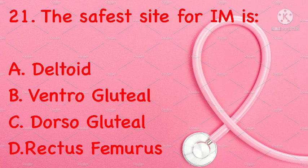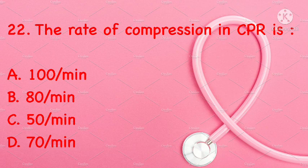The safest site for intramuscular injection is: deltoid, ventrogluteal, dorsogluteal, or rectus femoris. Correct answer is B: ventrogluteal.